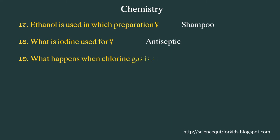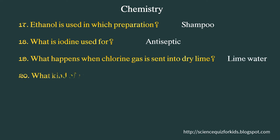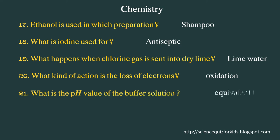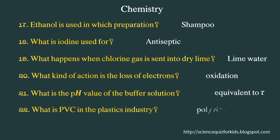What happens when chlorine gas is sent into dry lime? It forms bleaching powder. What kind of action is the loss of electrons? Oxidation. What is the pH value of a buffer solution? Equivalent to 7. What is PVC in the plastics industry? Polyvinyl chloride.